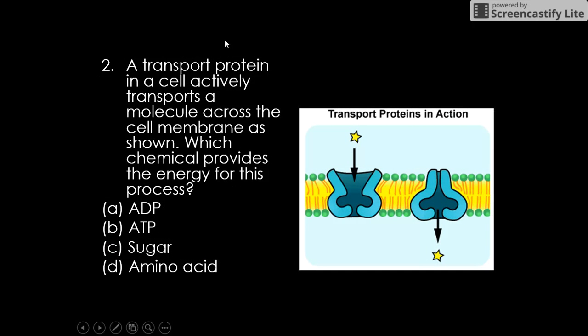Okay, two: a transport protein in a cell actively transports a molecule across the cell membrane. Which chemical provides the energy for this process? Even if you don't remember what active transport is, we always associate the word energy with ATP. ATP is our answer. Anytime we're talking about what thing is providing energy for this, it's always ATP.